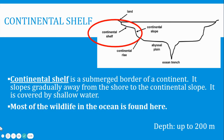We're going to start with the continental shelf. This comes after land — land is where us humans live. The continental shelf is a submerged border of a continent.